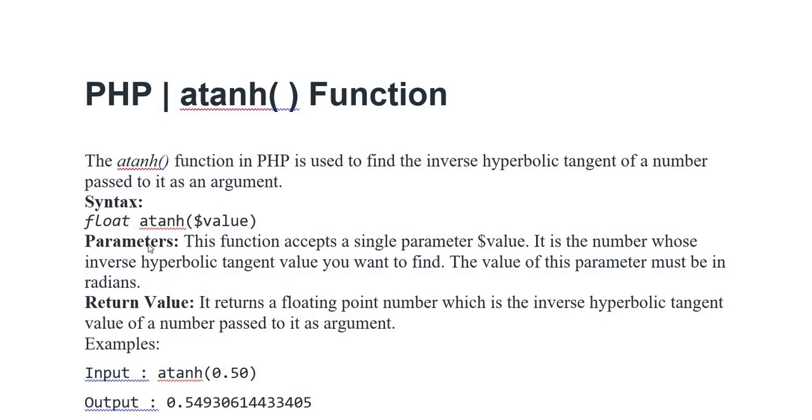Syntax: atanh(variable value). Parameters: This function accepts a single parameter which is called variable value. It is the number whose inverse hyperbolic tangent value you want to find. The value of this parameter must be in radians.